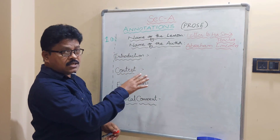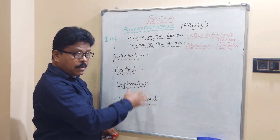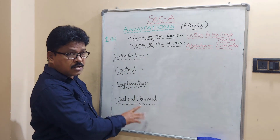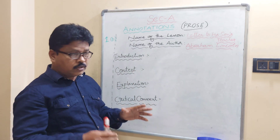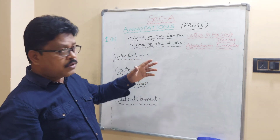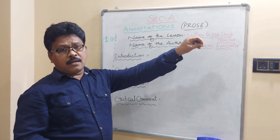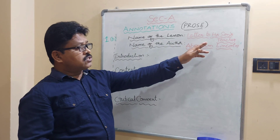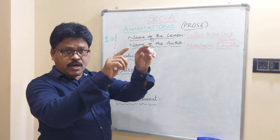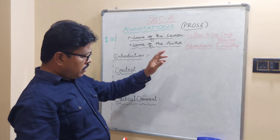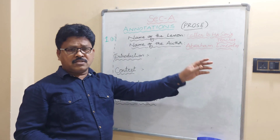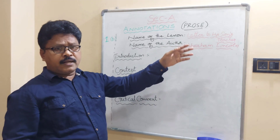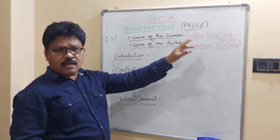For annotations, four paragraphs are required: Introduction, Context, Explanation, and Critical Comment. In the Introduction, write the lesson name and author name — for example: 'The given words are taken from the lesson "Letter to His Son's Teacher" written by Abraham Lincoln.' Then say something about the author — for example, he was the 16th President of the United States of America — one or two sentences.